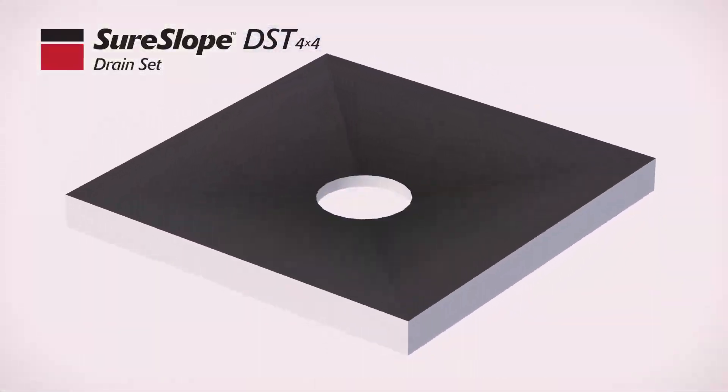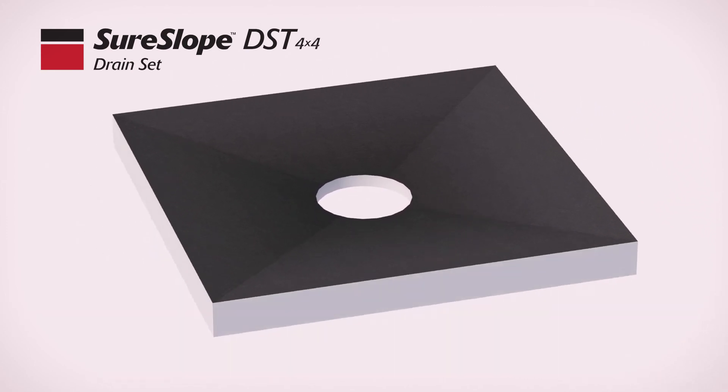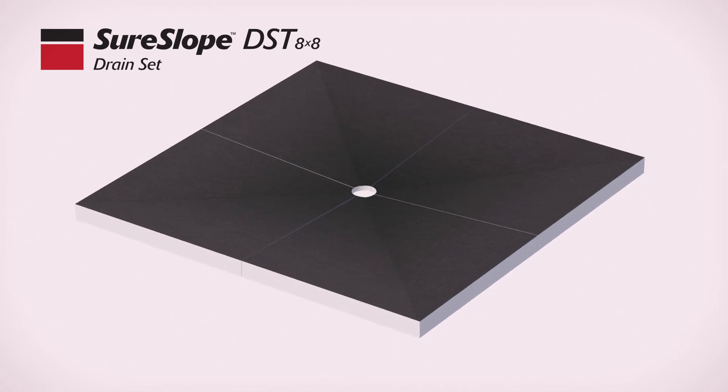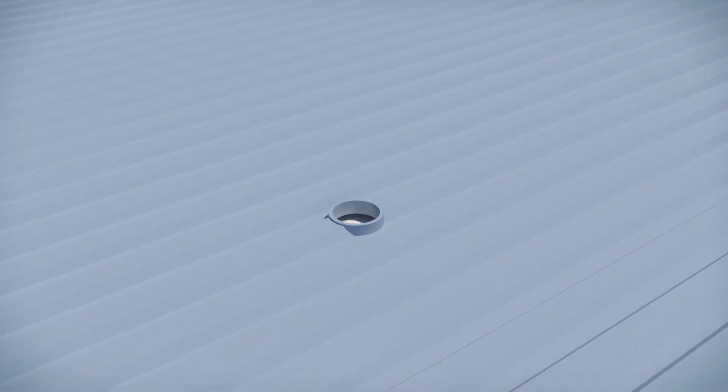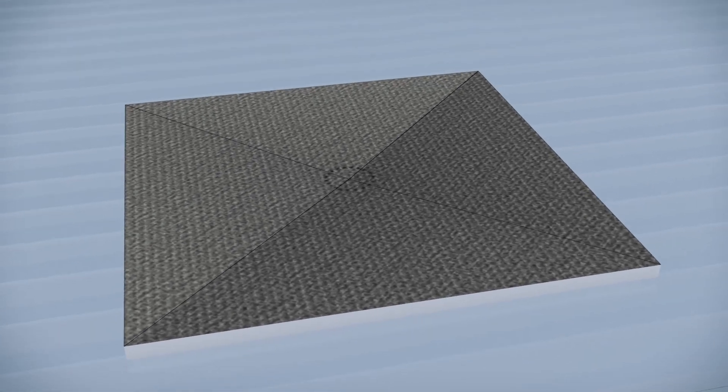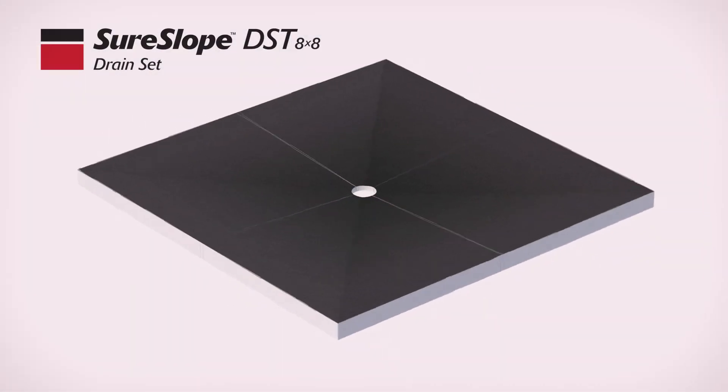The SureSlope drain set comes as a one-piece, four-foot-by-four-foot option or a four-piece, eight-foot-by-eight-foot drain set option. For the four-by-four, the contractor simply has to cut a hole for the drain and lay it in place.